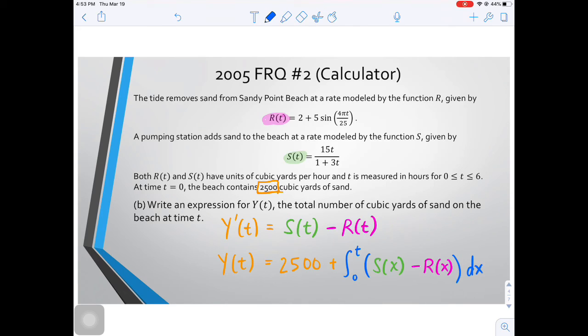Now, hopefully you're seeing that this is really just our kind of flipped version of the fundamental theorem of calculus. F(B) equals F(A) plus the integral from A to B of F prime of X dx. Our A is actually zero, and F of zero is 2500, so that's how we got the 2500. So then we go A to B, that'd be zero to t, and F prime is our Y prime, which is S(x) minus R(x). And that is an expression for Y(t), the initial amount of sand plus the change in the amount of sand over time.